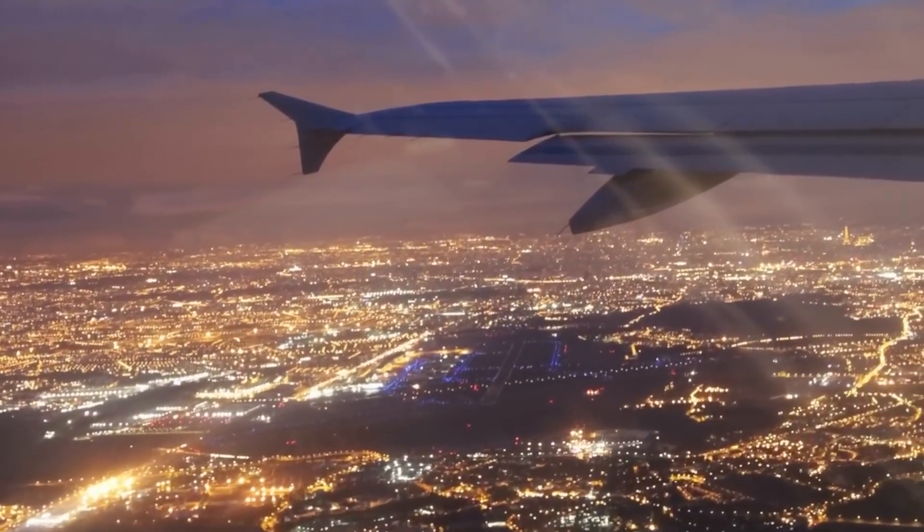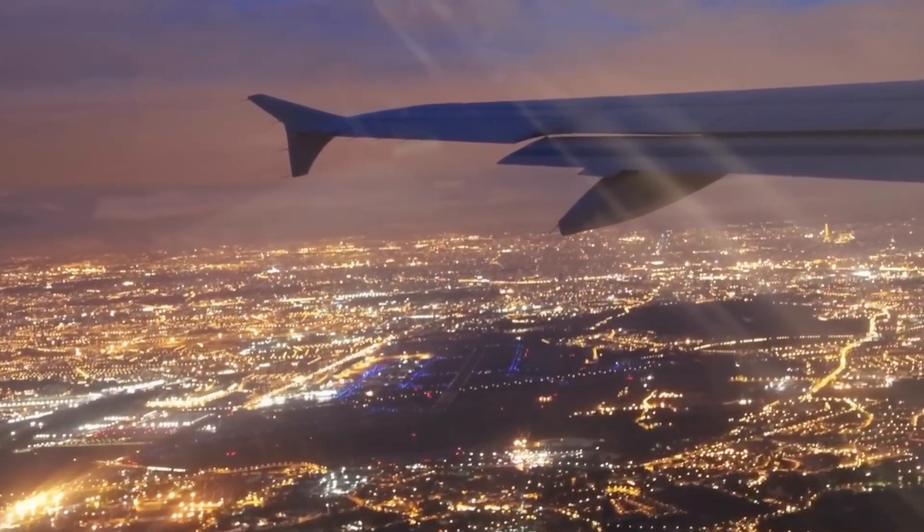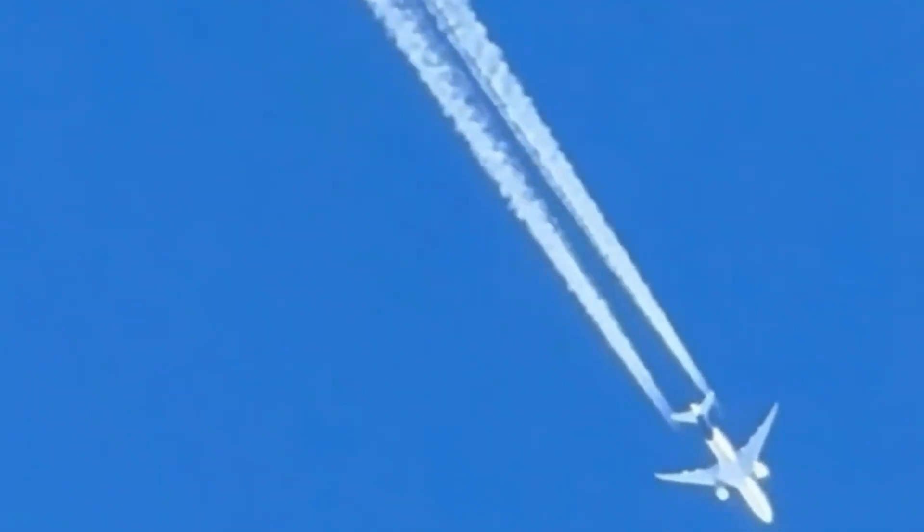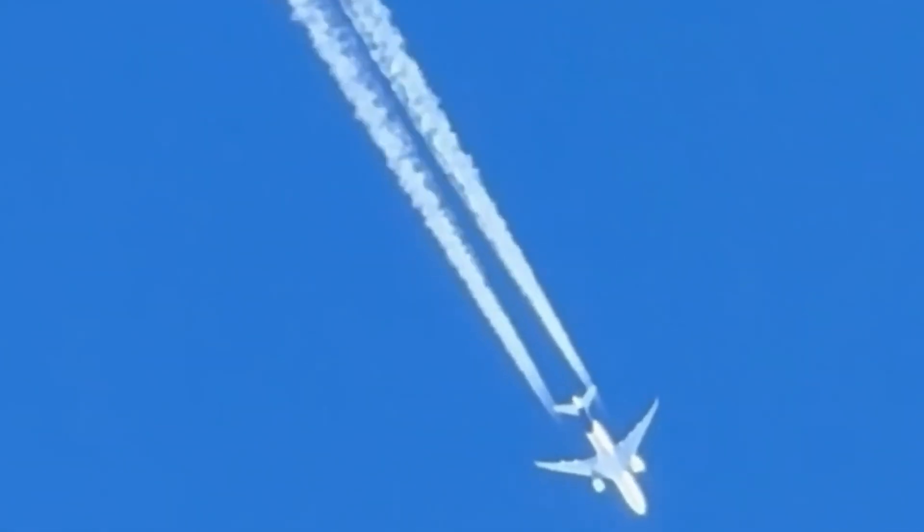Now, think from the point of view of someone down below, watching from the ground. To that person, the plane passes by too quickly, tracing a line in the sky. The perspective changes completely and reveals the true nature of movement.